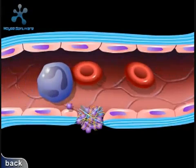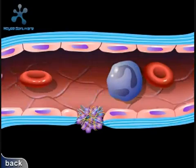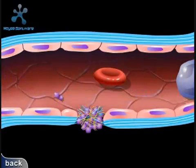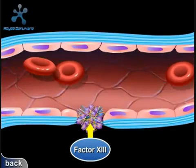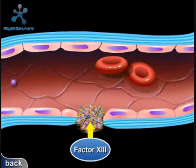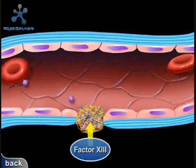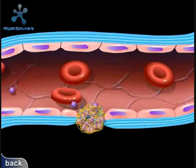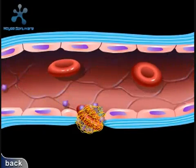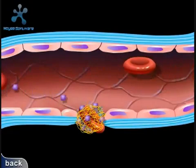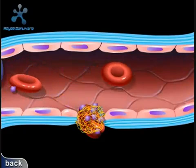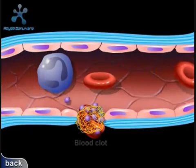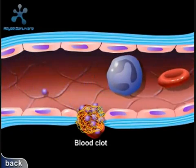Fibrin initially forms a loose mesh, but then factor 13 causes the formation of covalent crosslinks, which convert fibrin to a dense aggregation of fibers. Platelets and red blood cells become caught in this mesh of fibers, thus resulting in the formation of a blood clot.